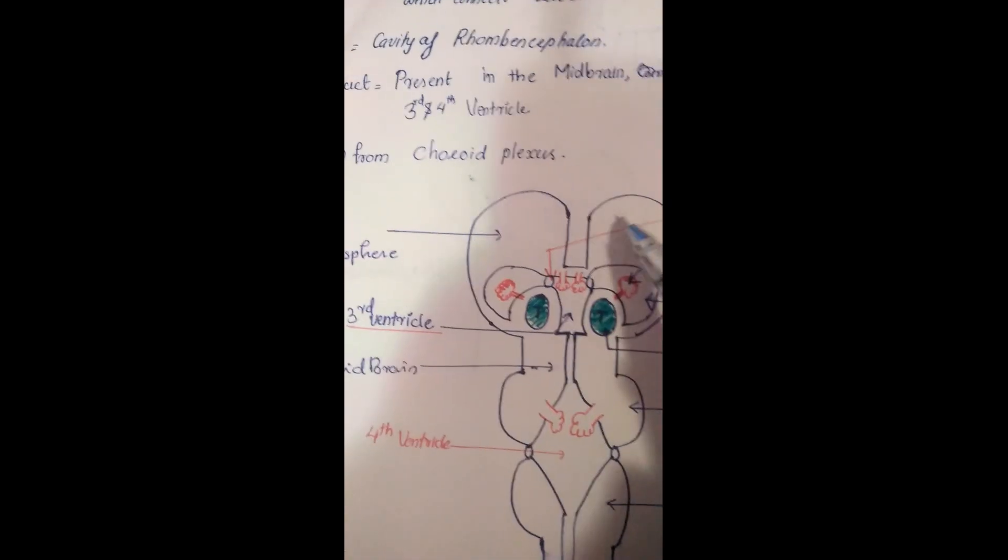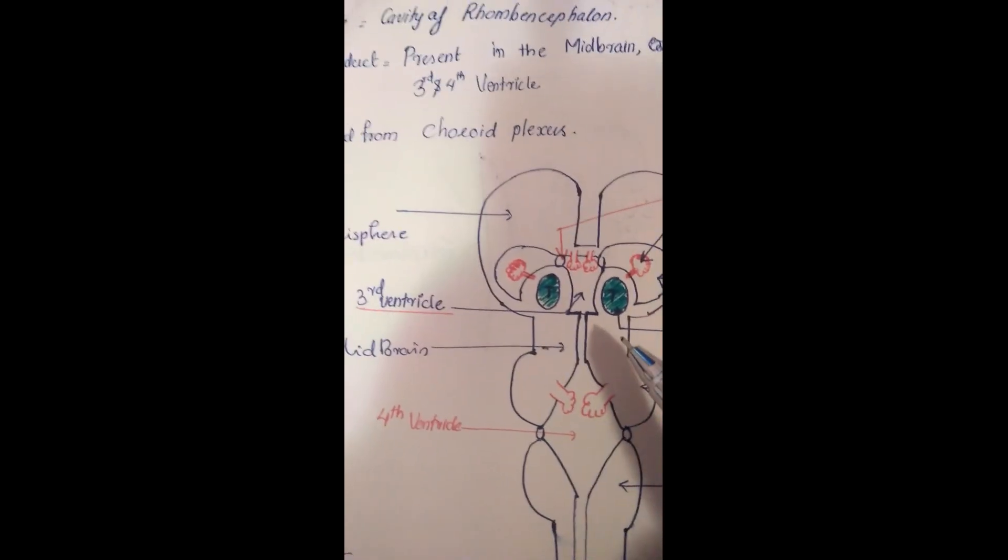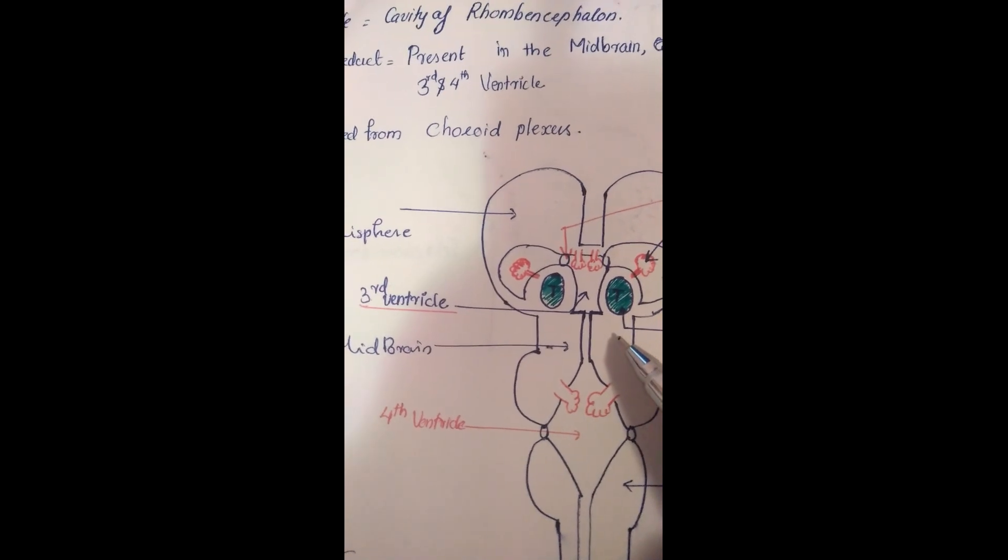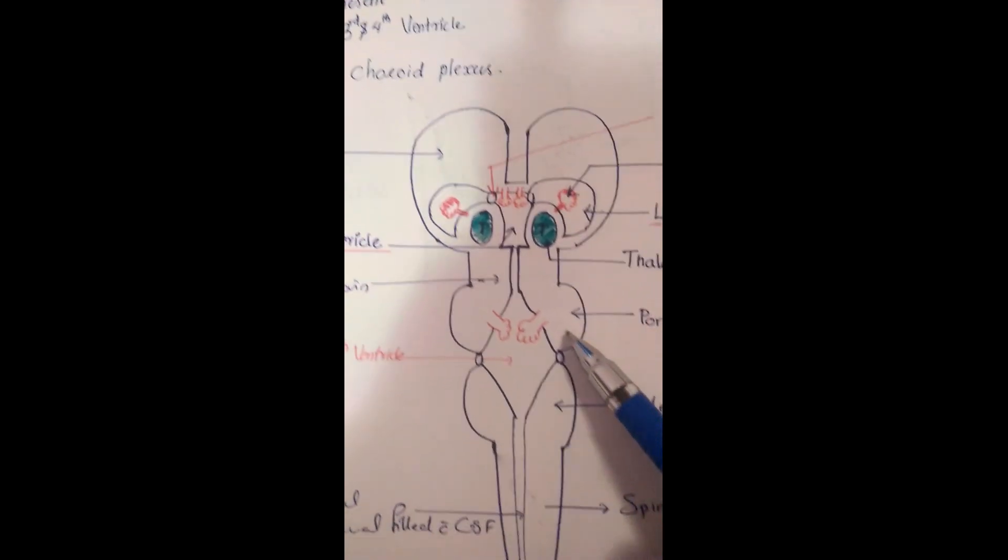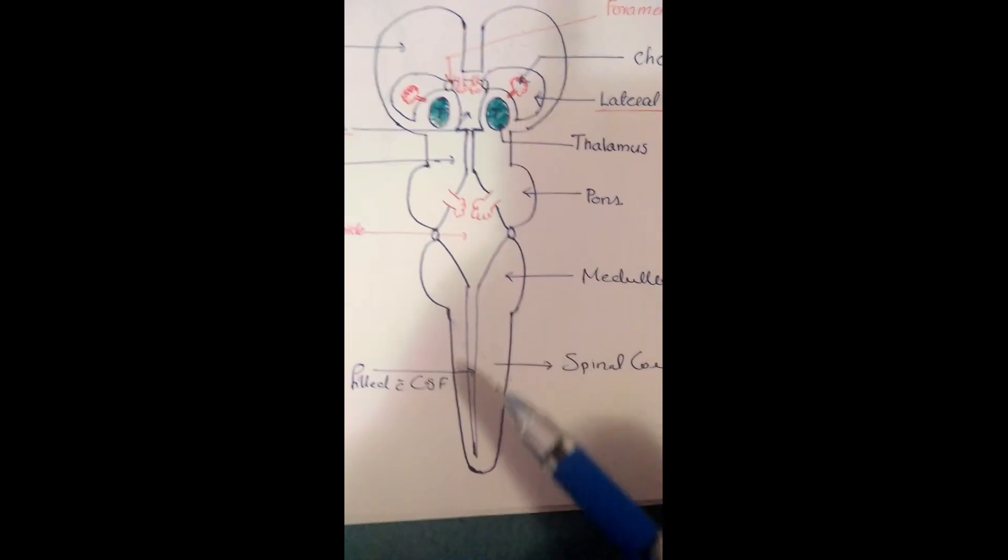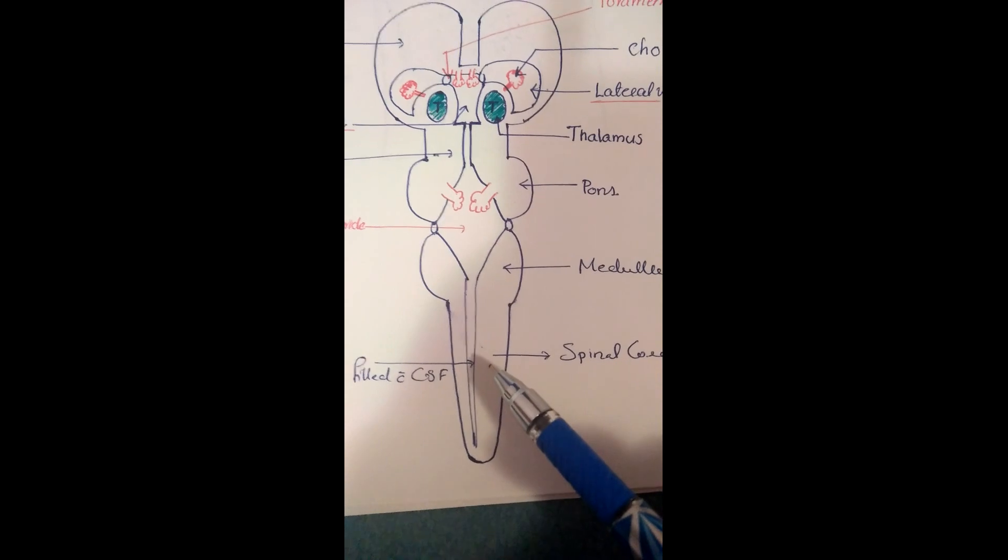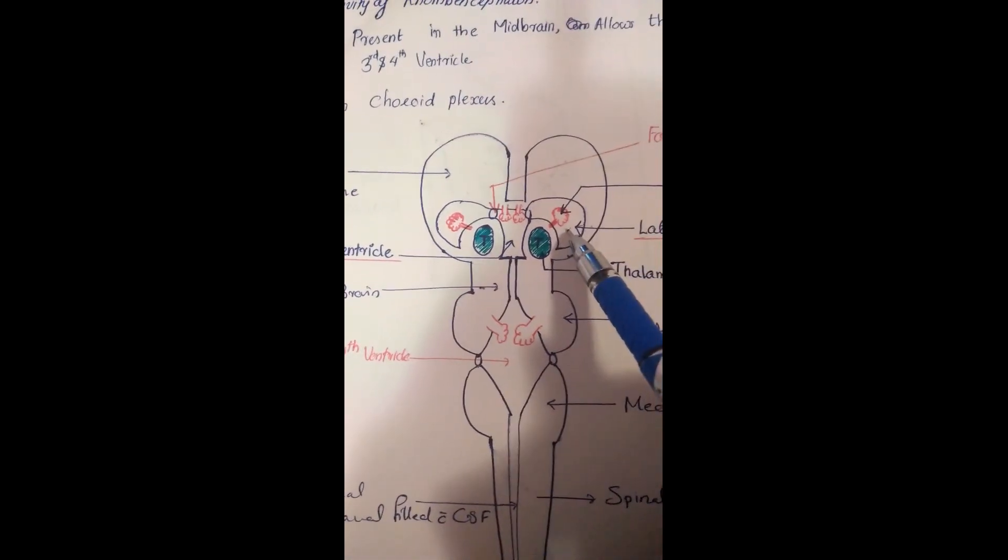What is this? This is the cerebral hemisphere. What is this? Midbrain. What is this? Pons. What is this? Medulla. What's this? Spinal cord. What is the cavity present here?